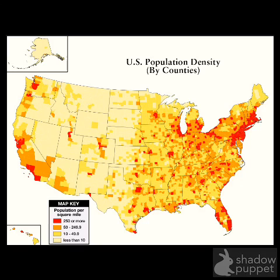One of the tools we can use to determine population settlement is a population density map, which tells us the number of people that live per square mile in an area. Here is a map of U.S. population density, color-coded with red being the most densely populated areas — 250 people or more — and lighter colors representing fewer than 10 people per square mile. Take note of the most and least densely populated areas, and think about why that is.